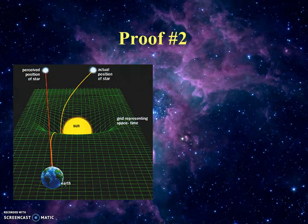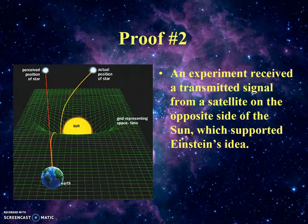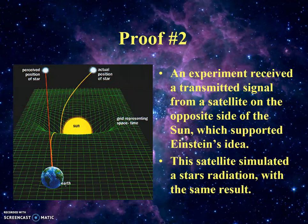For example, if you have the Sun in the middle, the Earth on one side, and a star on the other side directly behind it, you shouldn't be able to see it or receive any radiation from it. The energy going straight to the Sun gets blocked, but the energy going just beside the Sun gets curved around by the space-time continuum and we intercept it. We then trace it back in a straight line and it appears to be off to the left of the Sun. They actually did an experiment where a satellite went to the opposite side of the Sun and shot radiation beside it — there's no way we should have received the radiation, but we actually did. So a satellite simulated a star's radiation and they got the exact same result shown in the diagram.